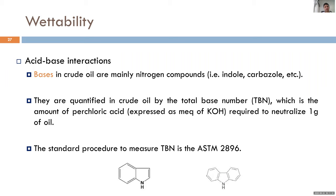Bases are mainly organic nitrogen compounds containing heteroatoms, mostly weak bases. They are characterized by the Total Base Number (TBN), the analog to TAN — it quantifies the amount of perchloric acid required to neutralize one gram of oil, expressed as equivalent milligrams of potassium hydroxide to correlate with TAN. There is an ASTM standard procedure to measure the TBN.